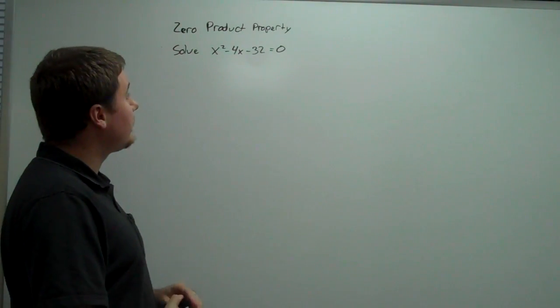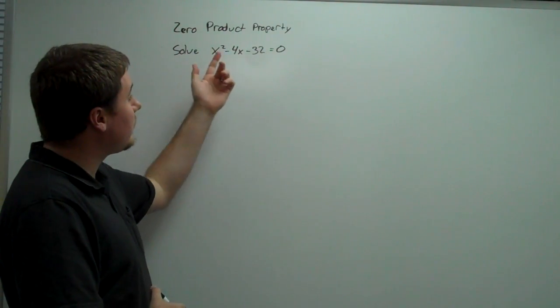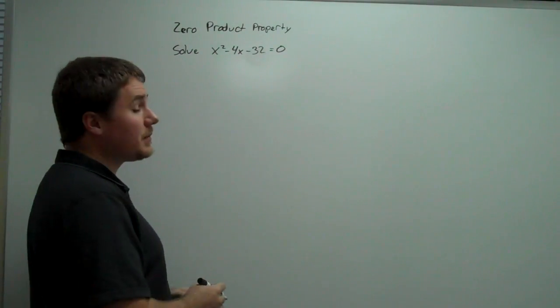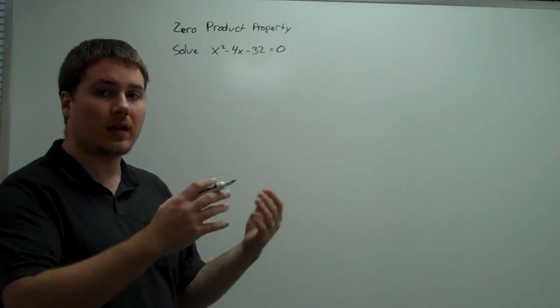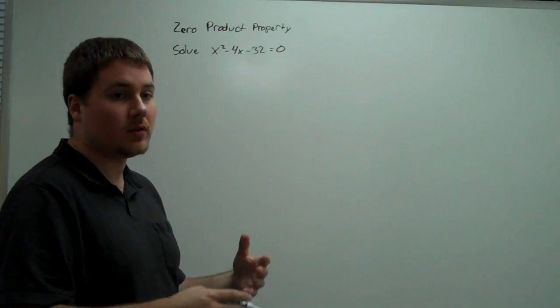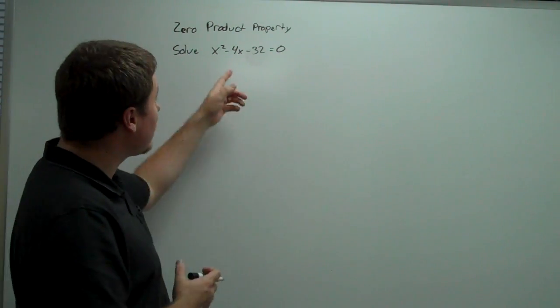But for this one, if we know the factors of negative 32 that combine to negative 4, it seems to me that it's negative 8 and 4. Negative 8 times 4 is negative 32, and negative 8 plus 4 is negative 4.